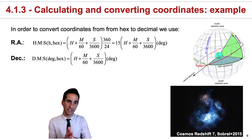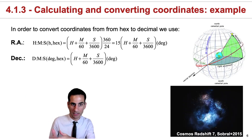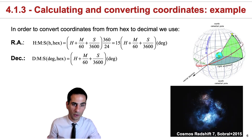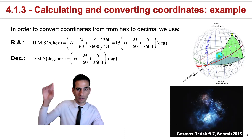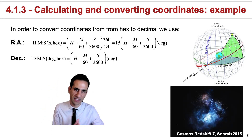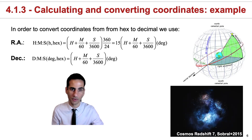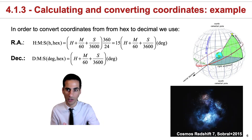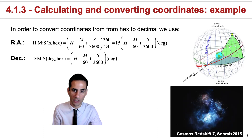Because right ascension is typically given in hours, minutes, and seconds of hours, and declination is given in degrees, arc minutes, and arc seconds, it is very good to know the transformations from this sexagesimal system to the decimal degree system, which is used in a lot of coding and also to send telescopes to those locations.